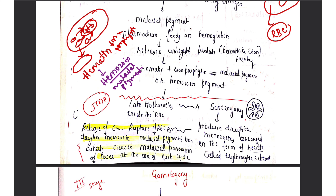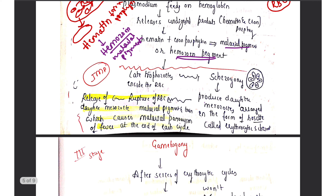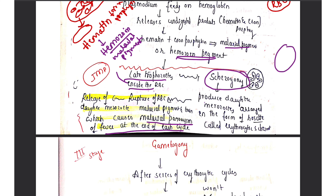Once this malarial pigment or hemozoin pigment is released, there is a relapse of fever — the malarial paroxysm of fever — which occurs at the end of each cycle. Once there is a rupture of the RBC, the hemozoin pigment and merozoites are released. The late trophozoites inside the RBC feed on hemoglobin and further develop to form daughter merozoites inside the RBC in a rosette shape.